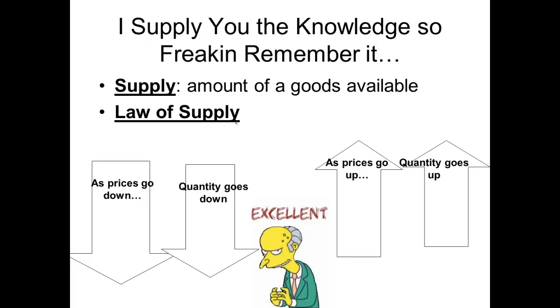So anyways, the law of supply is not very difficult to really understand. Basically the law of supply states is that as prices go down, the quantity supplied goes down.